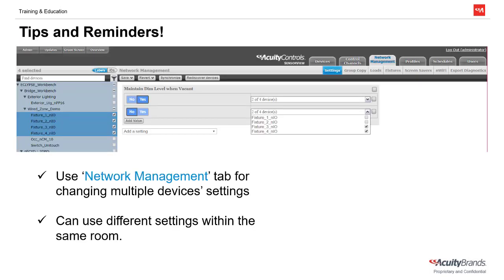A couple tips and reminders to keep in mind when programming NLIGHT output devices. Remember to use the Network Management tab when we want to change the behavior of multiple devices. Usually when we're changing these settings, we're having to change multiple — sometimes even hundreds of devices at a time — and we can accomplish this easily with the Network Management tab using the checkboxes for each device we wish to modify.